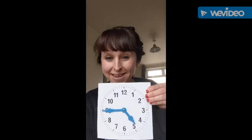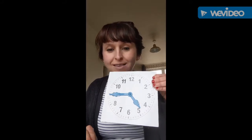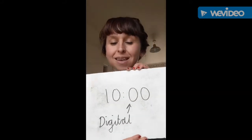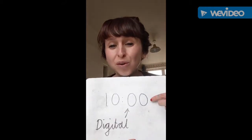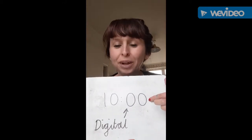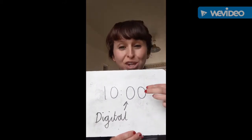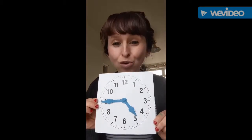In the learning objective today it said we're going to be focusing on telling the time with an analogue clock. An analogue clock is a clock like this, and it's not a digital clock. A digital clock is one that you'd see on a computer screen, for example. We're not focusing on digital this week - instead we're going to focus on analogue, so clocks like this.